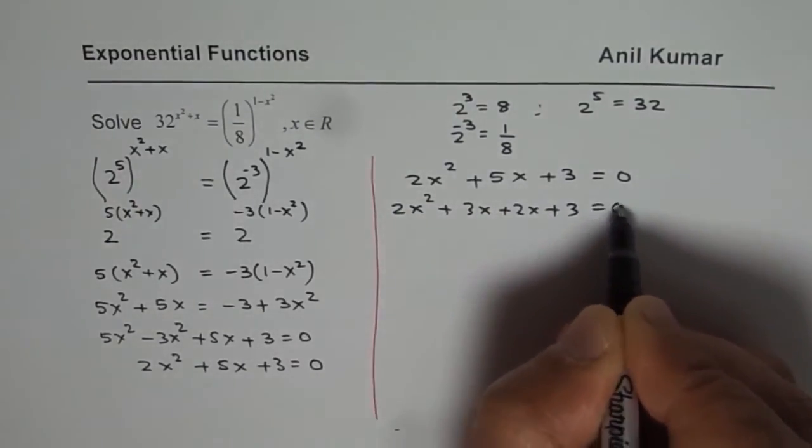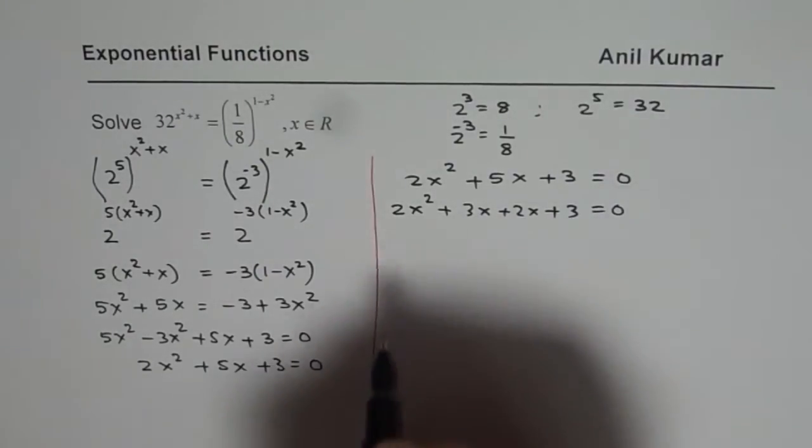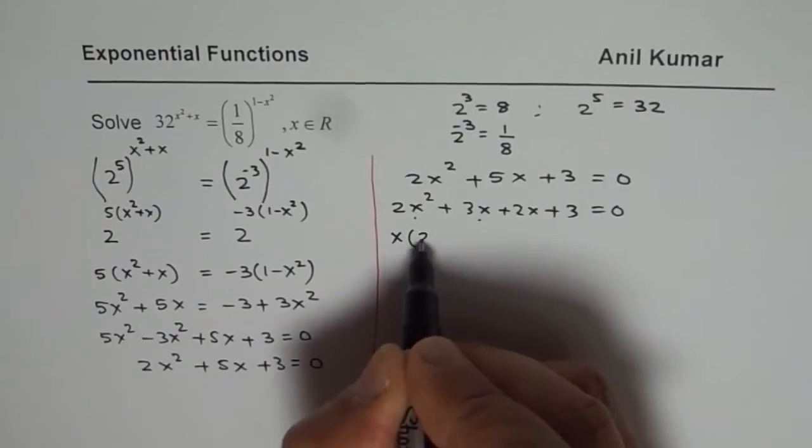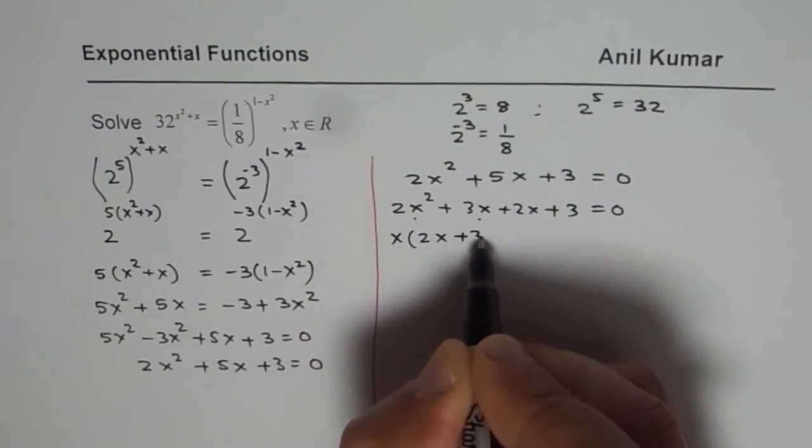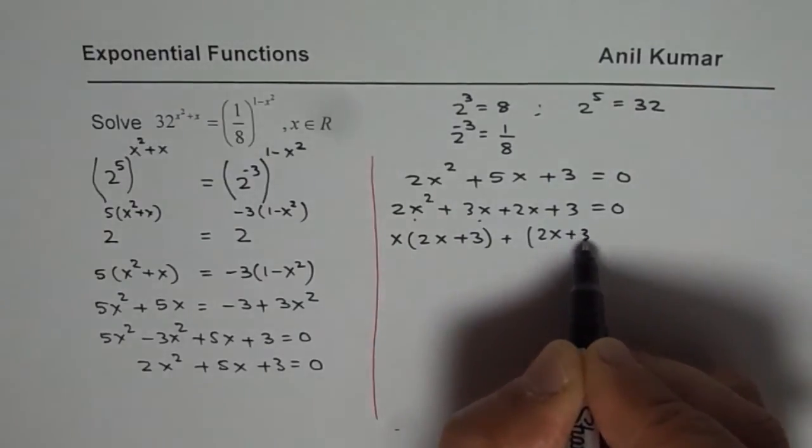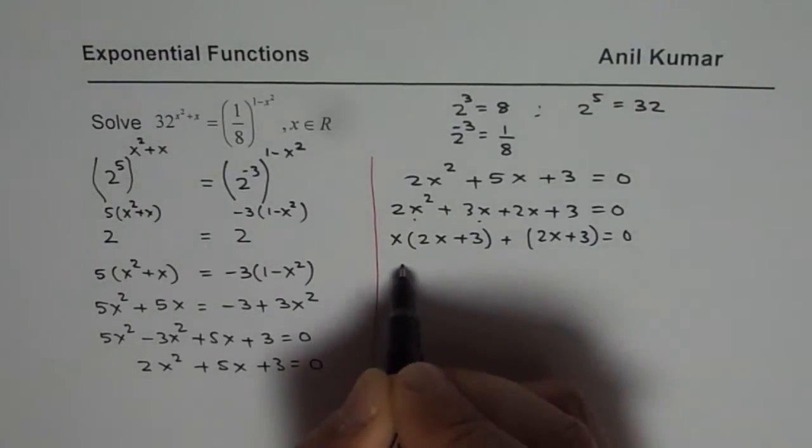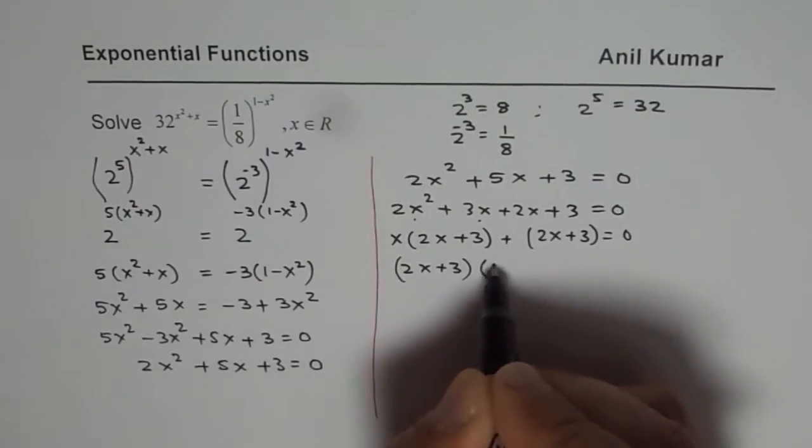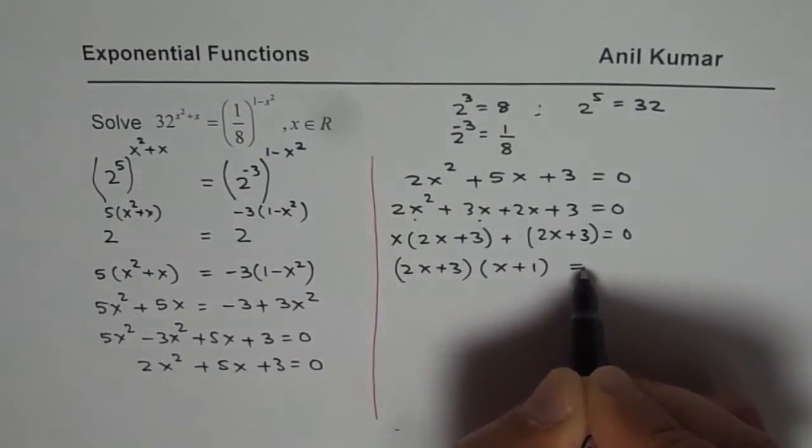So writing 5x as 3x plus 2 can help us factor this. Amongst first two, x is common. So we have 2x plus 3 and here 1 is common. We could factor 2x plus 3. 2x plus 3 is a common factor. So we have 2x plus 3 times x plus 1 equals to 0.